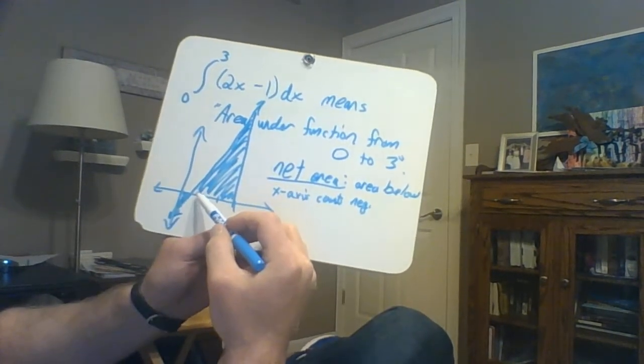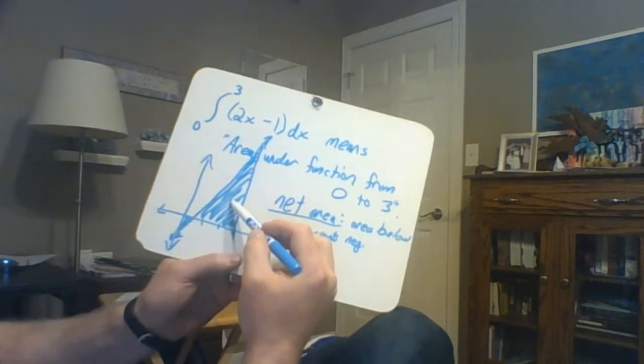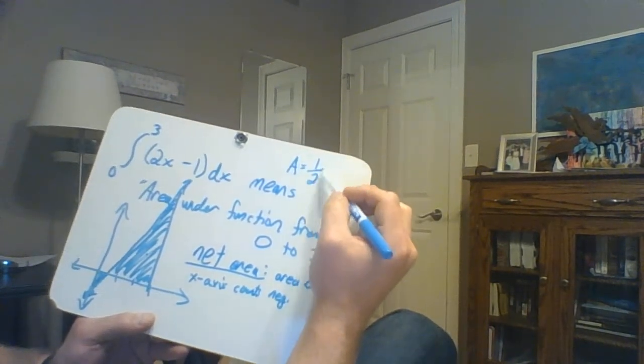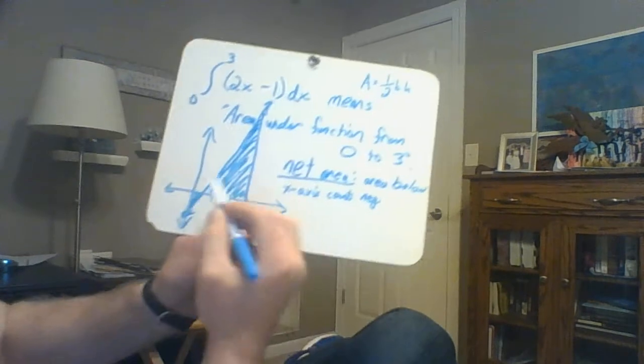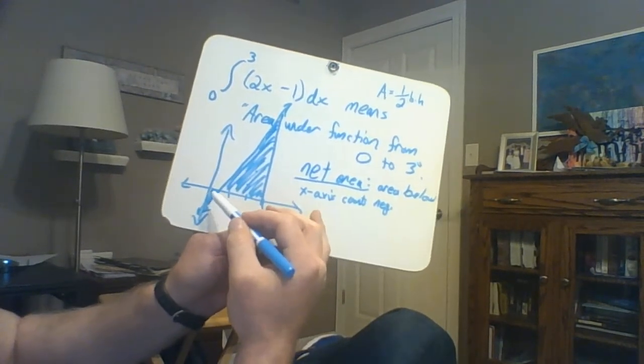And so we'd have to, if we were doing, finding the net area, we would take the area of this triangle, which, by the way, remember the formula for the area of a triangle, 1 half base times height, and then we'd take the area of this triangle, and we'd subtract this one away from that one, because this one counts as negative.